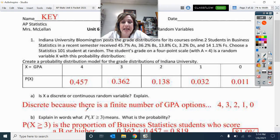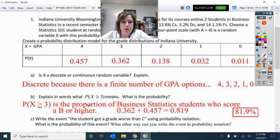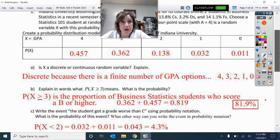Now explain in words what X being greater than or equal to three means, and what that probability is. So for probability of X being greater than or equal to three, that tells me that will be the proportion of students at Indiana University who got a B or higher. That's what that's telling me. And then I just added those two percentages together. So 81.9 percent got a B or higher.